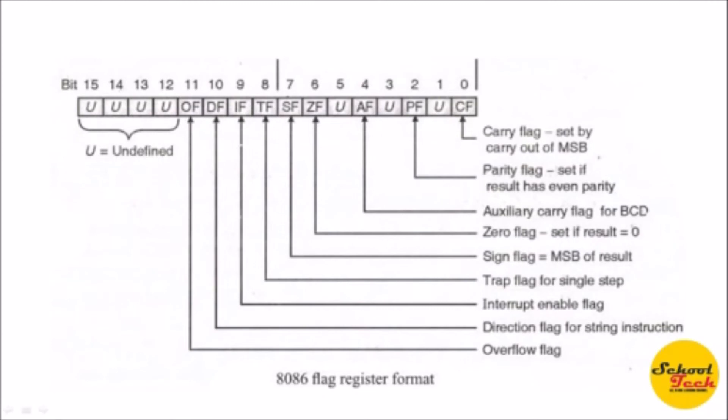As we conclude the architecture of 8086, we move to the flag registers. The flag register is a 16-bit register also called PSW (Program Status Word), used to reflect and show the status of the final result generated by the ALU after a calculation is performed. There are nine flags defined in the 8086 processor. The Carry Flag (CF) indicates the 17th bit — the carry or borrow generated after 16-bit addition or subtraction.